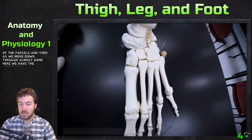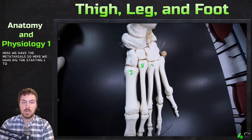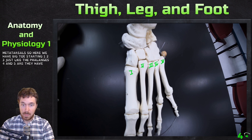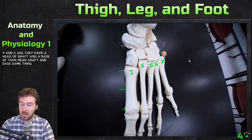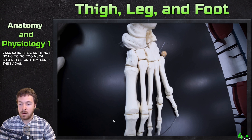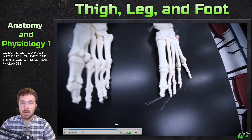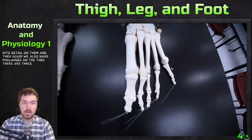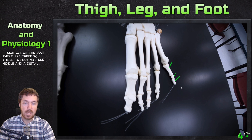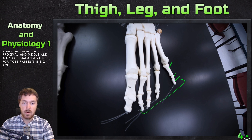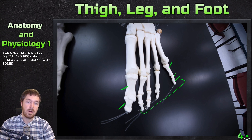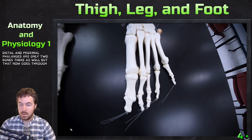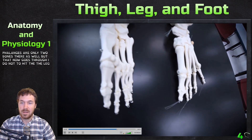Moving distally, the metatarsals are numbered one through five starting from the big toe. Each has a head, shaft, and base. The phalanges on the toes: four toes each have a proximal, middle, and distal phalange. The big toe only has a proximal and distal phalange — two bones instead of three.